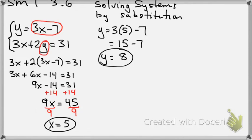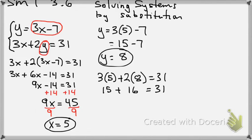Now to check it, I'm going to go back to this other equation and plug in both numbers. So 3 times x, which is 5, plus 2 times y, which is 8, better be 31. So 3 times 5, 15. 2 times 8, 16. And 15 plus 16 is 31.